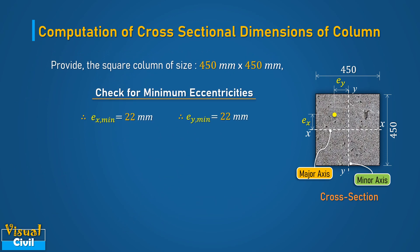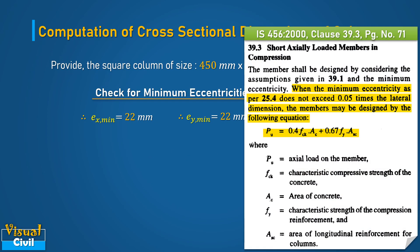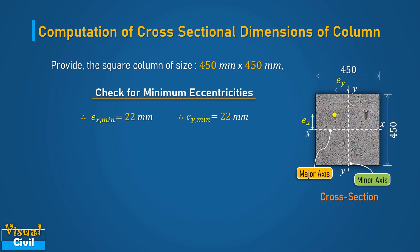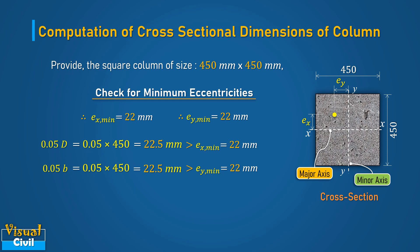As per clause 39.3, these calculated minimum eccentricities should not exceed 0.05 times the lateral dimension, as the given equation in this clause is used for the design. Calculate the values of 0.05 times depth and 0.05 times width, which are equal to 22.5 mm. These values are more than the minimum eccentricities. Hence, the assumption of minimum eccentricity is satisfied. In case this check fails, then increase the column dimension and recheck the minimum eccentricities.